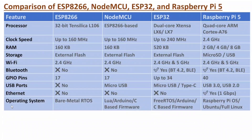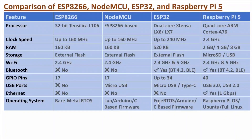If you talk about operating systems, ESP8266 has a bare-metal RTOS operating system. NodeMCU supports Lua, Arduino, and C-based firmware. ESP32 supports FreeRTOS, Arduino, and C-based firmware. Raspberry Pi 5 runs a full Linux operating system — either Raspberry Pi OS or Ubuntu OS.